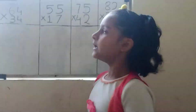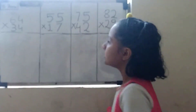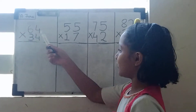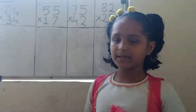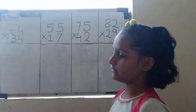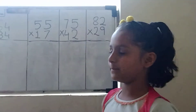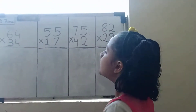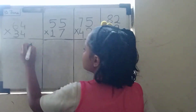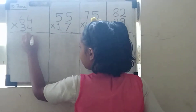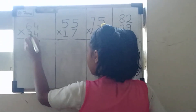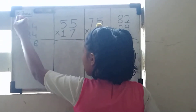We will multiply 64 multiplied by 34. Then we will multiply 4 multiplied by 4 equals to 16. Then we will write 6 here and 1 will be carried up.